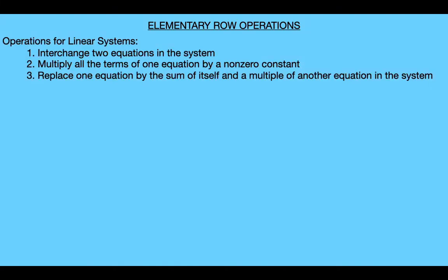Now before I give the row operations, first remember that we have these three operations for linear systems. The first operation says we can interchange two equations. The second one says we can multiply all the terms of one equation by a non-zero constant. And the third operation says we can replace one equation by the sum of itself and a multiple of another equation. We proved that applying any one of these three operations to a linear system results in a new linear system with the same solution set.